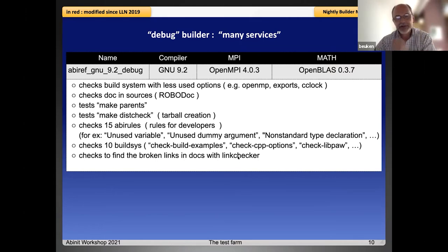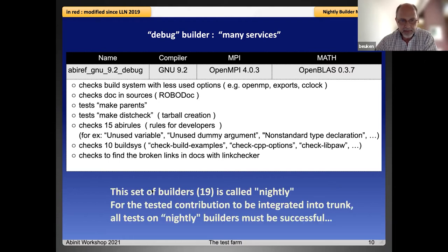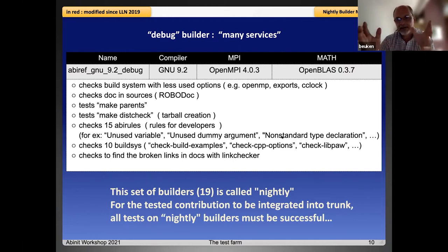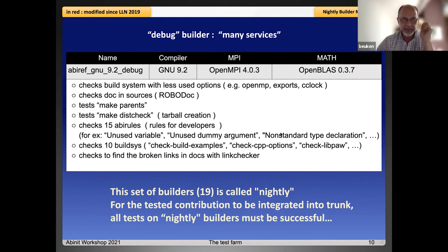The debug builder is a special builder that performs many services. It is in charge of checking many features which are not tested on the other builders. We can mention: checking the respect of coding rules, checking the generation of documentation, checking the consistency of the build system, and finding broken links in the documentation. This set of builders is called the nightly group. For a tested contribution to be integrated into trunk, all tests in this nightly group must be successful.